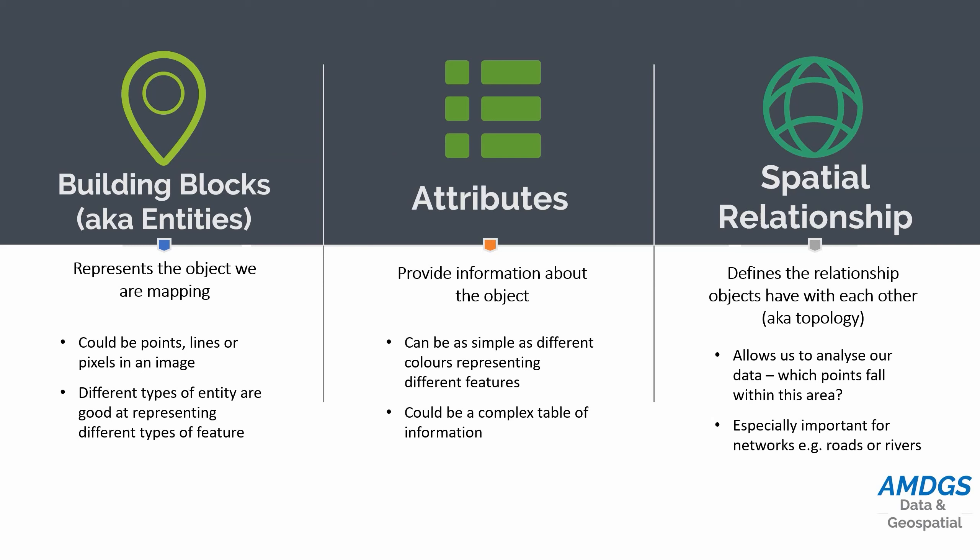Spatial relationships address how objects are positioned and how they relate to each other — this is particularly important for things like networks. If we have points showing where crimes occurred and polygons showing local districts, the spatial relationship can be as simple as these points fall within this district. But for networks we need more complex relationships — for example, what happens at a junction: is it right-hand turn only, or is this road one-way so we can only move down it in one direction?